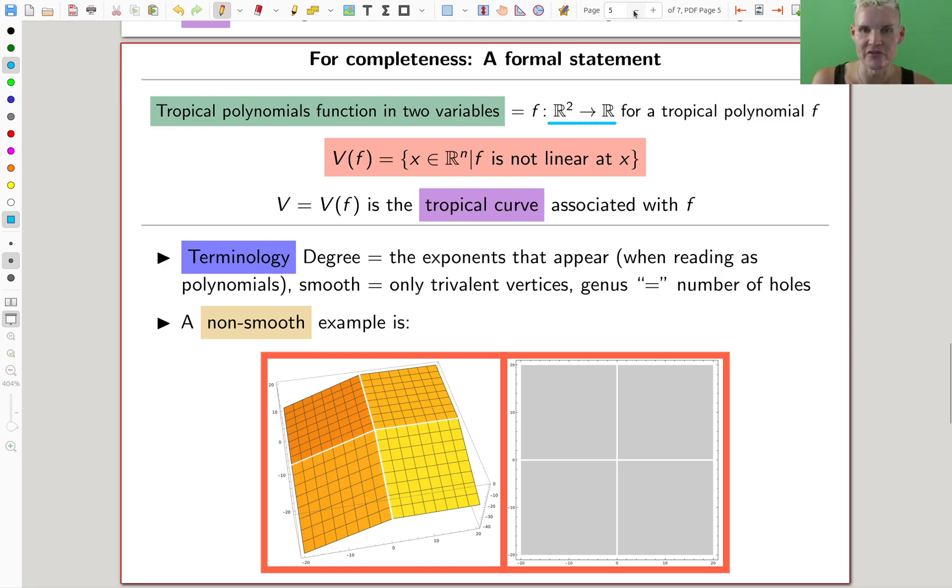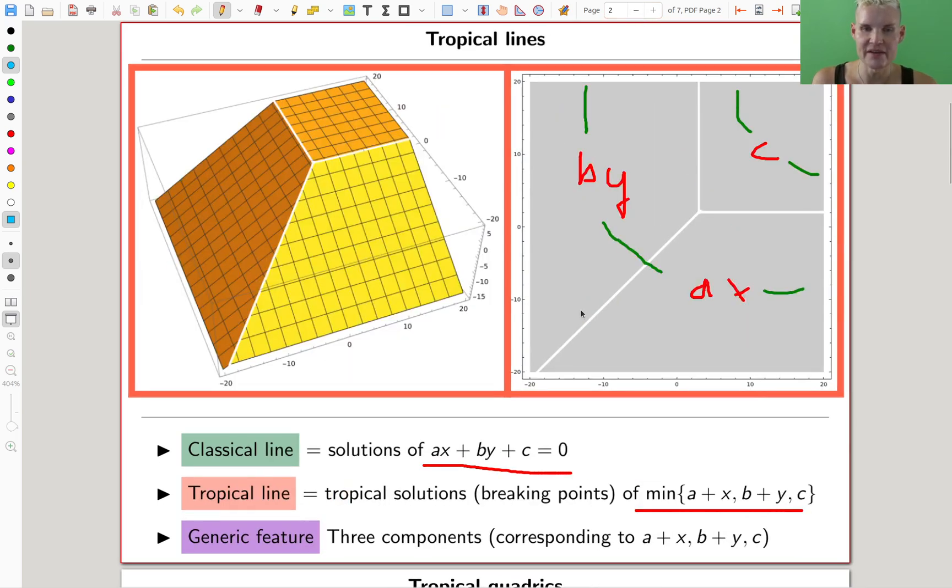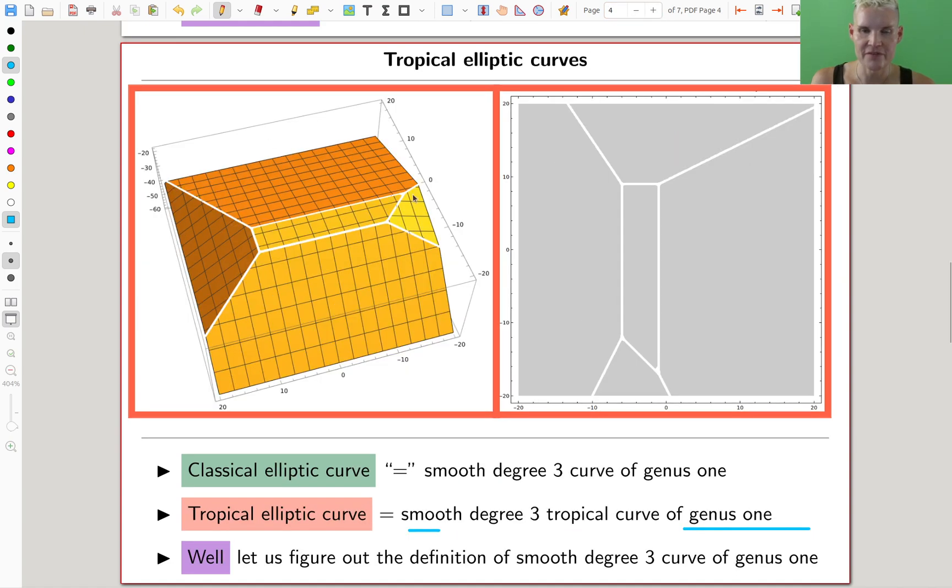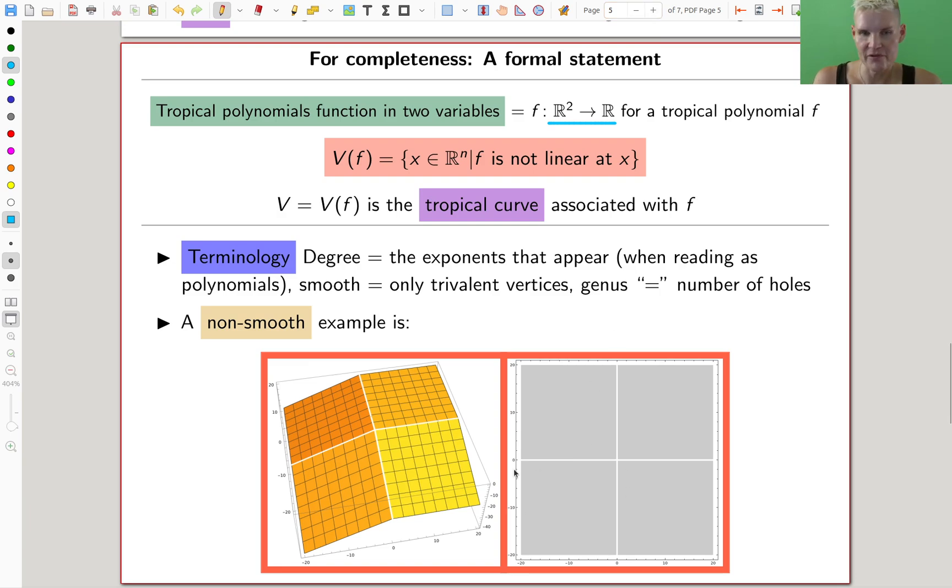Smooth is kind of a fun condition. So the correct replacement for smooth in tropical land is that every vertex has degree 3. And every vertex you see has degree 3. Everything is kind of a tripod, a trivalent vertex. That's called smooth. This one is smooth, this one is smooth, and this one is not smooth. So smooth is only trivalent vertices in this case. It's not really smooth in the standard sense of smooth, but it's still smooth, if you know what I mean. This is tropical smooth. Only trivalent vertices, actually a really easy condition.